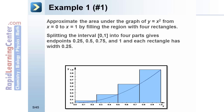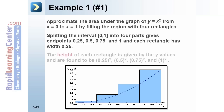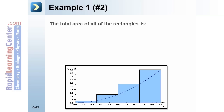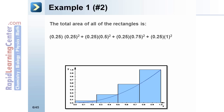Splitting the interval [0, 1] into four parts gives endpoints 0.25, 0.5, 0.75, and 1, and each rectangle has width 0.25. The height of each rectangle is given by the y values: 0.25 squared, 0.5 squared, 0.75 squared, and 1 squared. The total area of all the rectangles is 0.25 times 0.25 squared plus 0.25 times 0.5 squared plus 0.25 times 0.75 squared plus 0.25 times 1 squared.